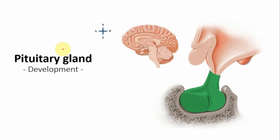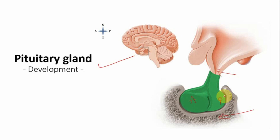Let us begin with the pituitary gland first. This is an orientation to show the location of the pituitary gland; a mid-sagittal section of the brain is taken. The pituitary stalk and the infundibulum extend down as the pituitary gland, sitting in the sella turcica. There is an anterior pituitary, posterior pituitary, and an intermediate pituitary with a cleft in between.